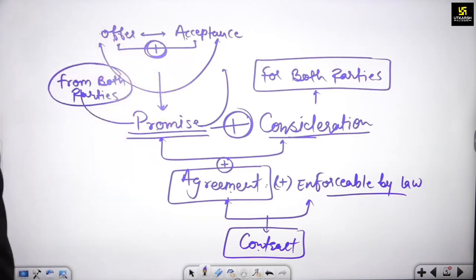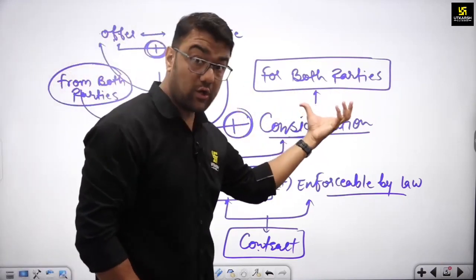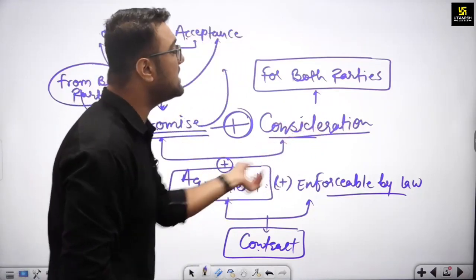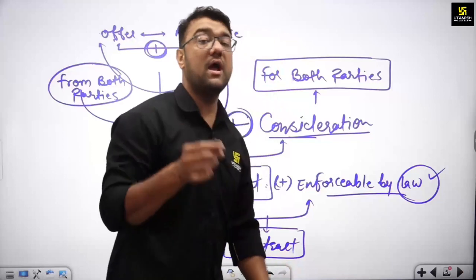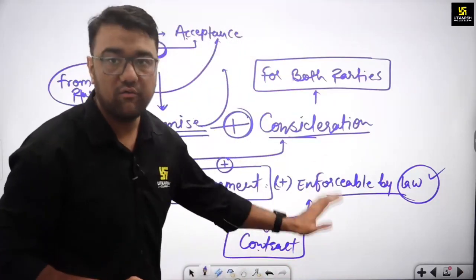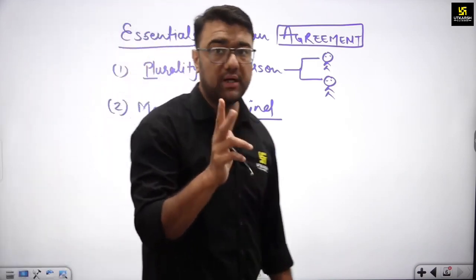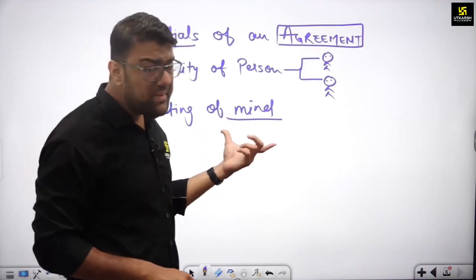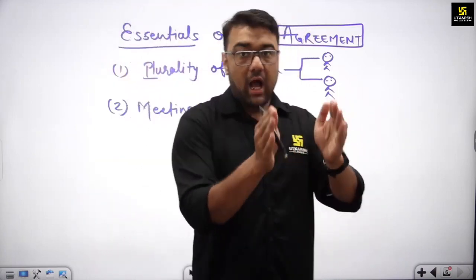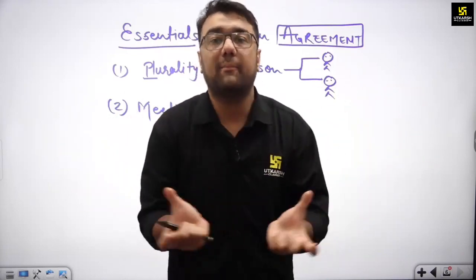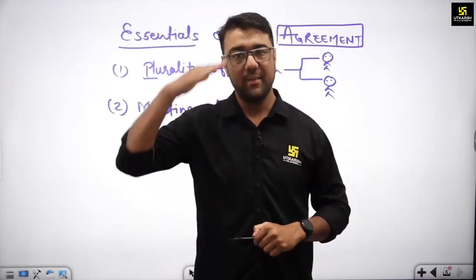So let me quickly recap: offer plus acceptance will become a promise from both sides of parties. And when consideration is added under the promise for both parties, it will become an agreement. An agreement which is enforceable by the law — where all provisions have been followed and the law will help you enforce that agreement — it will become a contract, a valid contract. The essentials of agreement are: plurality of persons — there must be at least two persons — and between them, meeting of mind must happen, which we also call consensus ad idem. I hope you get my points. See you in the next interesting video. Tada, bye-bye, see ya!